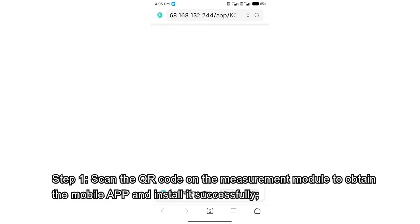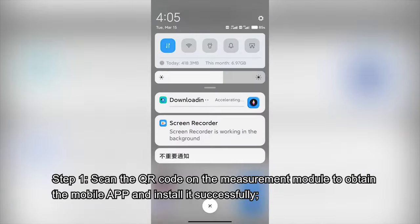Step 1: Scan the QR code on the measurement module to obtain the mobile app and install it successfully.